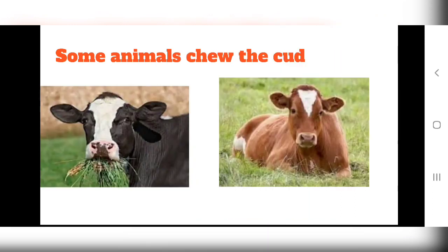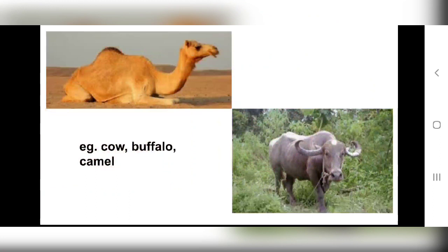The next feeding habit is some animals chew the cud. Animals like cow, buffalo and camel first nibble their food — they cut and eat it. Then they put it inside their bodies. For example, a cow or camel first eats grass and takes it inside their body. Then when they relax, they bring this part of the food from their body back to their mouth, chew it again properly, and swallow it once more. This is known as chewing the cud.